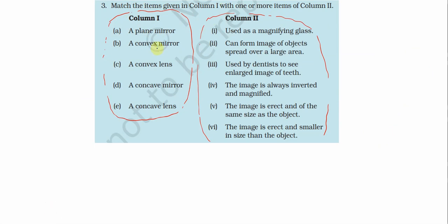First is a plane mirror. Plane mirror is related to one statement. First statement: used as a magnifying glass — this is wrong. Next is: can form images of objects spread over a large area — not true, because this is a convex mirror. Next: used by a dentist to see a magnified image of the teeth — dentist uses a concave mirror.